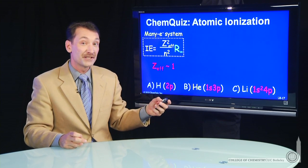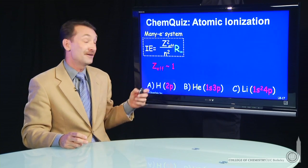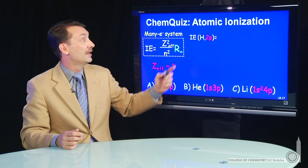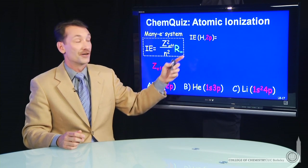So the effective charge on all of them is about one. For hydrogen, it's exactly one. And we can calculate these ionization energies.